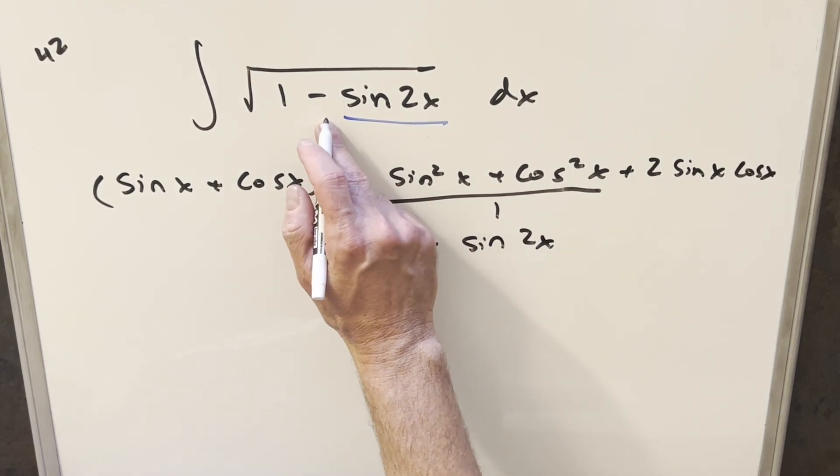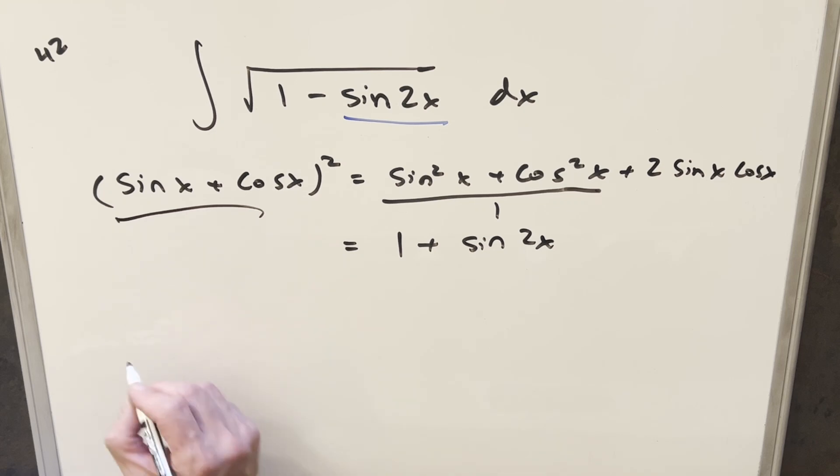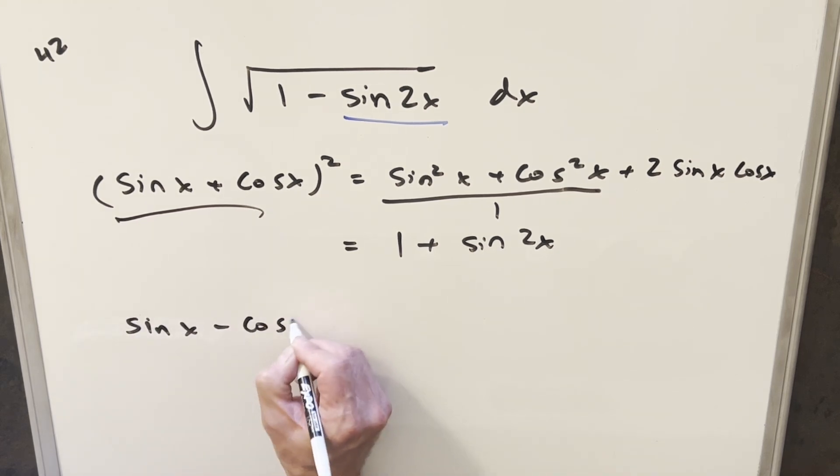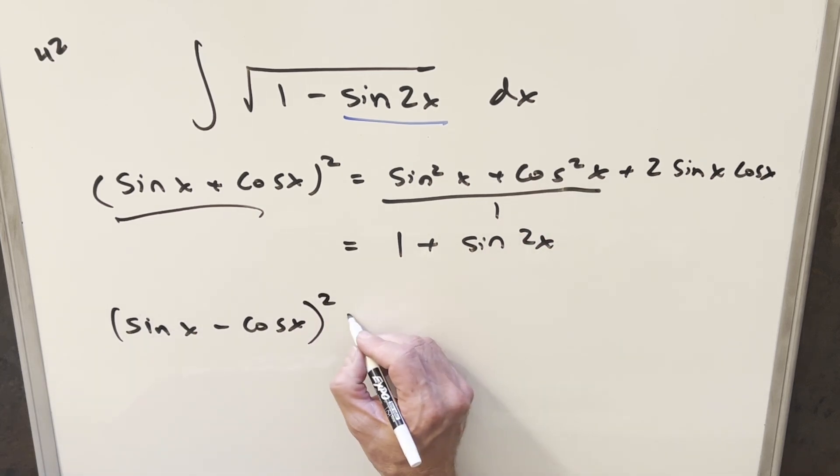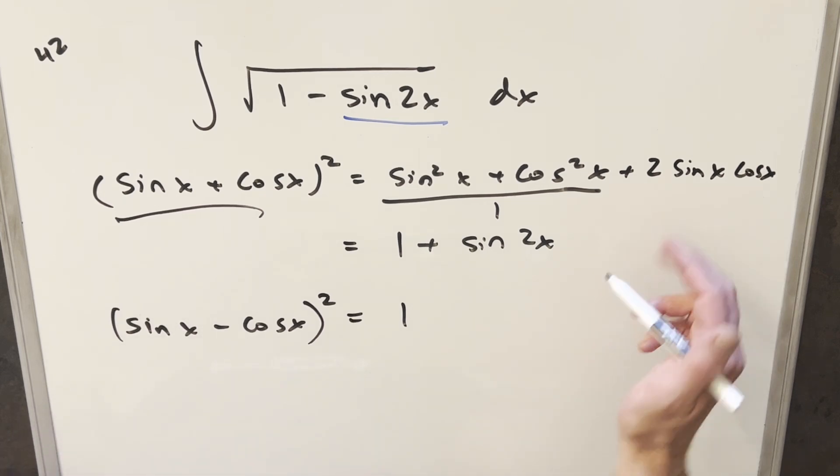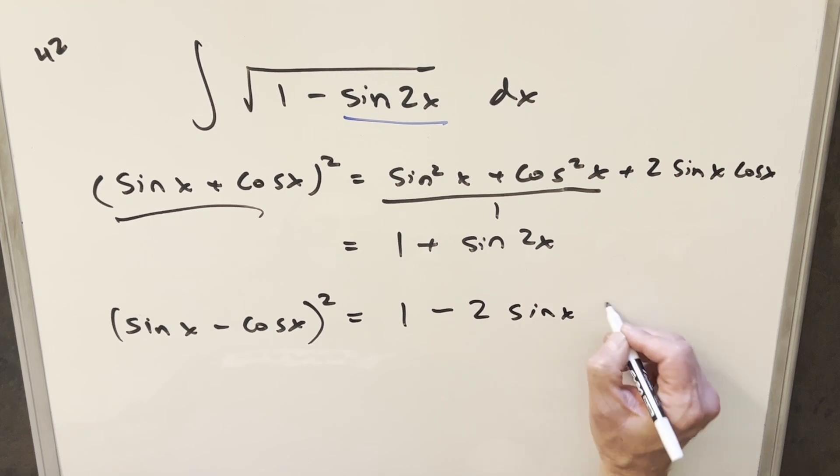That's really similar to what we have there, but not quite. We need a different version of this. What we can do is look at sine x minus cosine x. Doing the same thing, squaring it out, you're going to get sine squared x plus cosine squared x, so our first part's going to be 1. And then multiplying out the middle terms, we're going to get the same thing but with a minus sign, so we get minus 2 sine x cos x. Rewriting this with the double angle formula, we have 1 minus sine 2x.